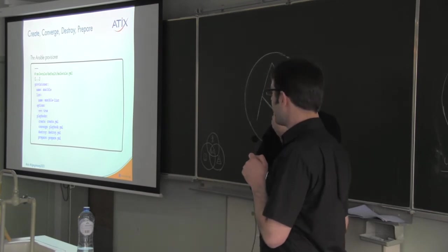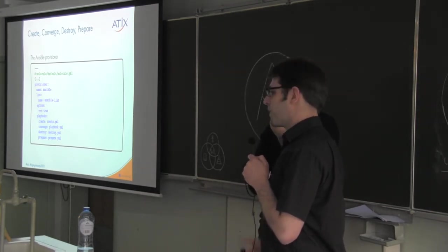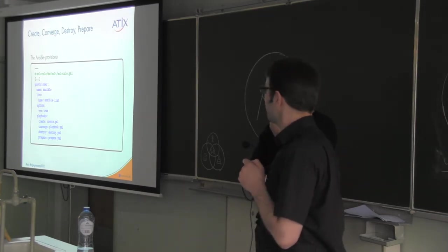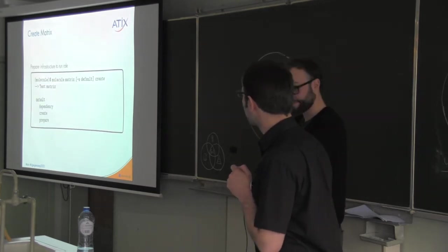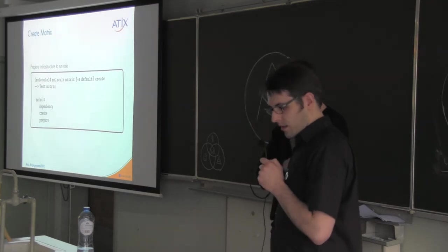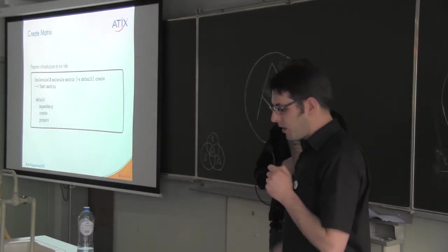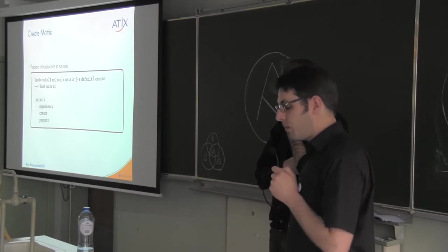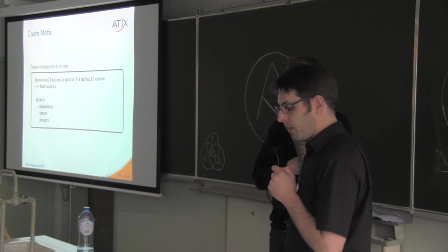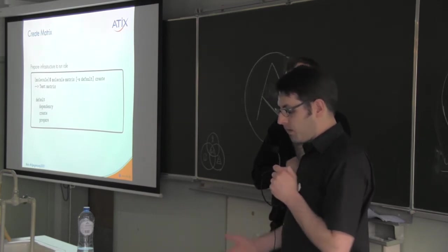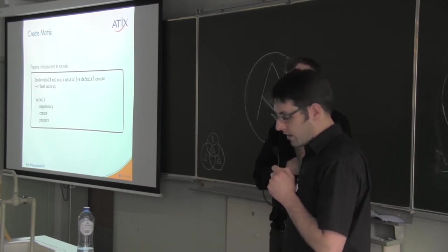And then you call the actual playbook, which is called the converge step. I don't know exactly why. I think it's because all of this is going to be idempotent. With the matrix command, again, you can look at what would happen if I called molecule create. And the test matrix says, well, I need the dependencies first, and then I create the machine, and then I do the prepare step.